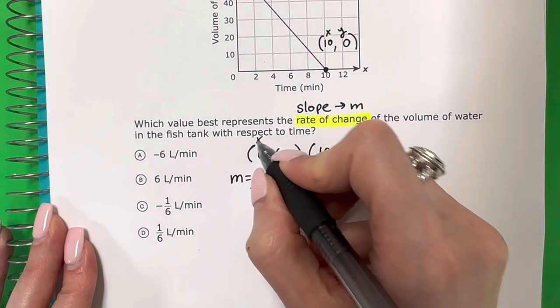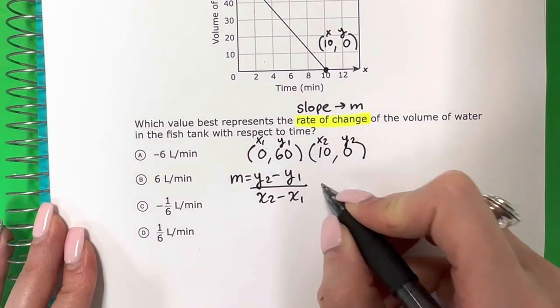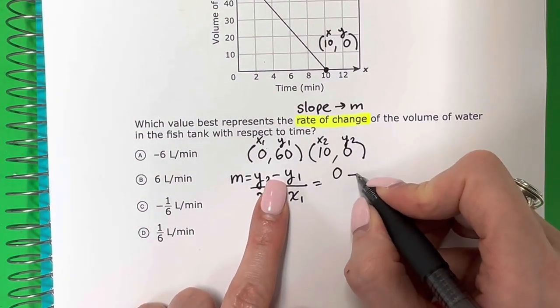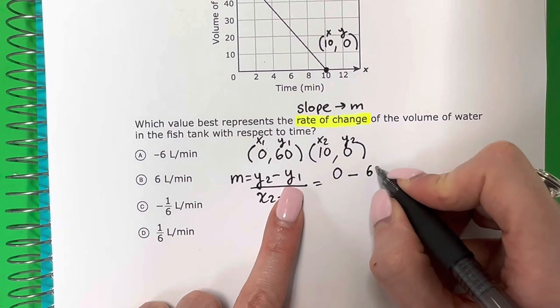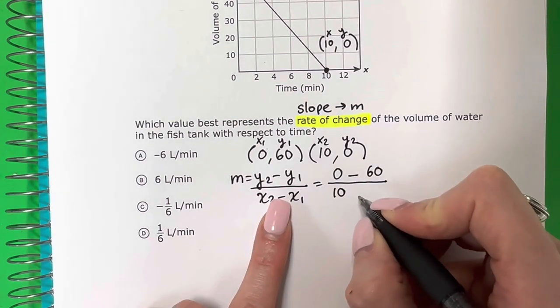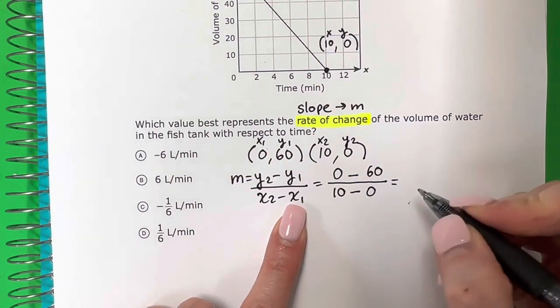Okay, we're going to need to write X1, Y1, X2, Y2. Let's do the formula. Y2 is 0. Minus. Y1 is 60. Divide it by. X2 is 10. Minus. X1 which is 0.